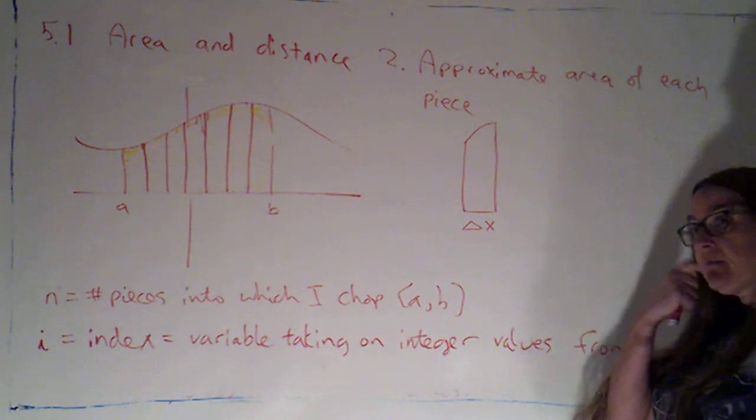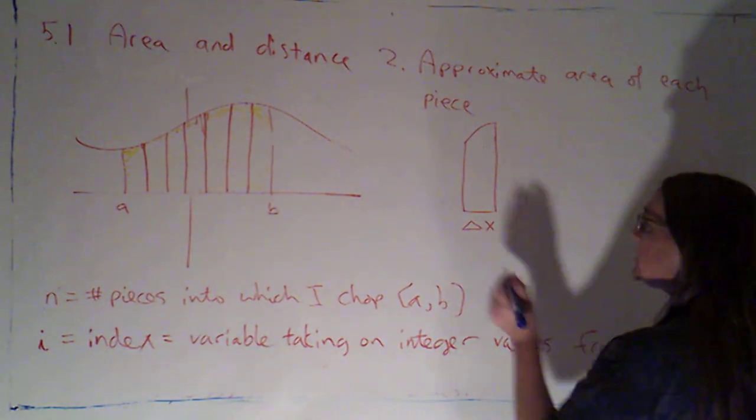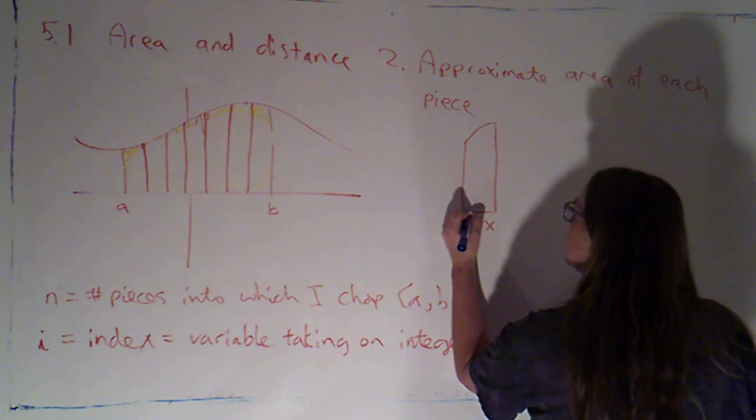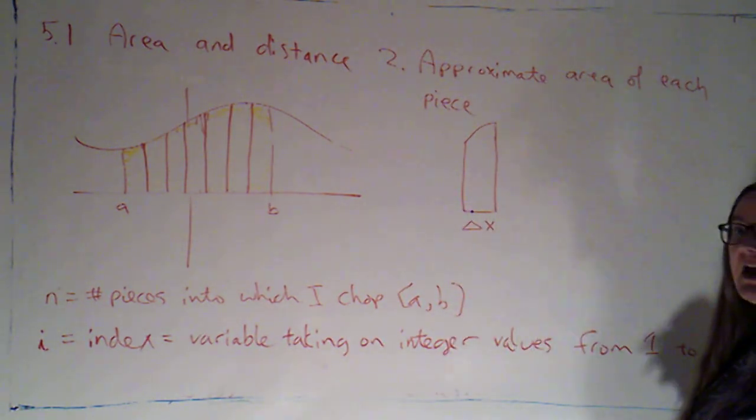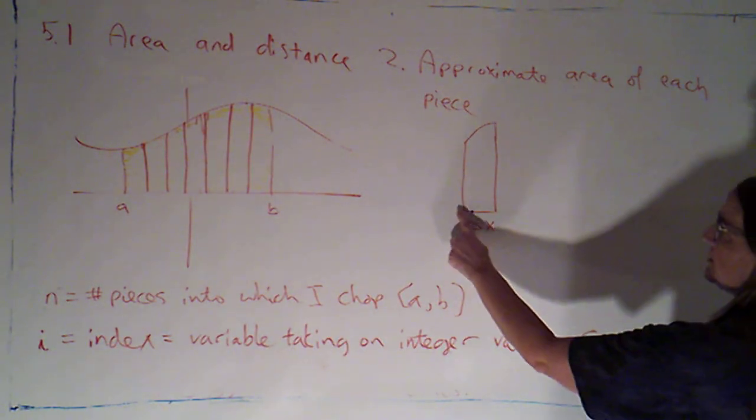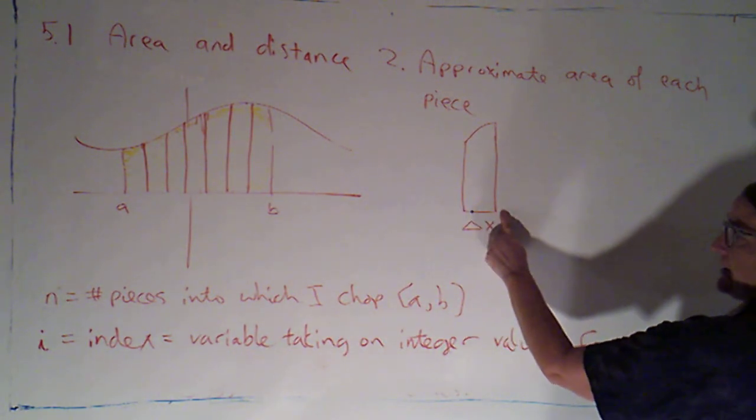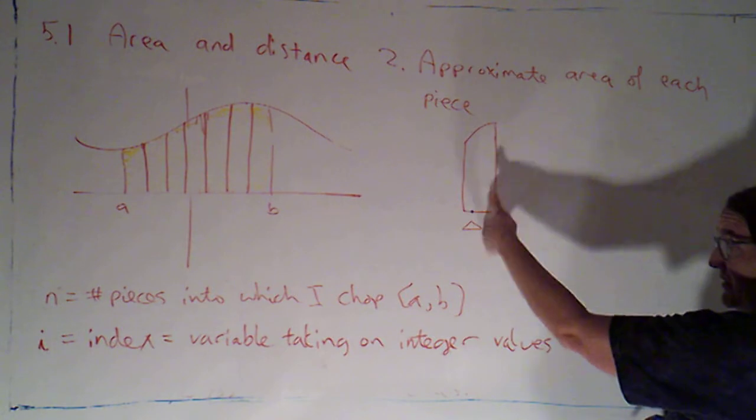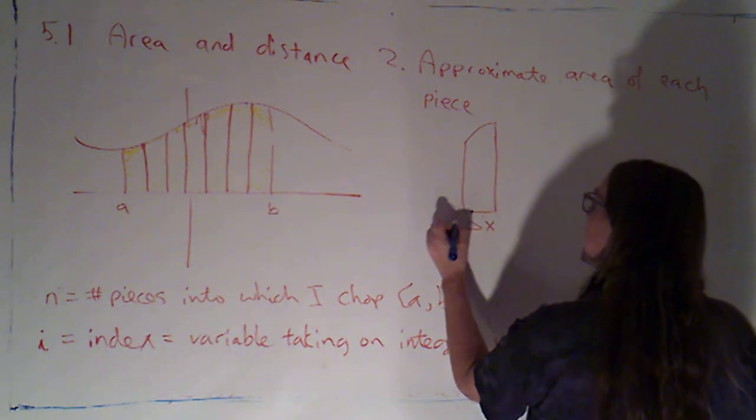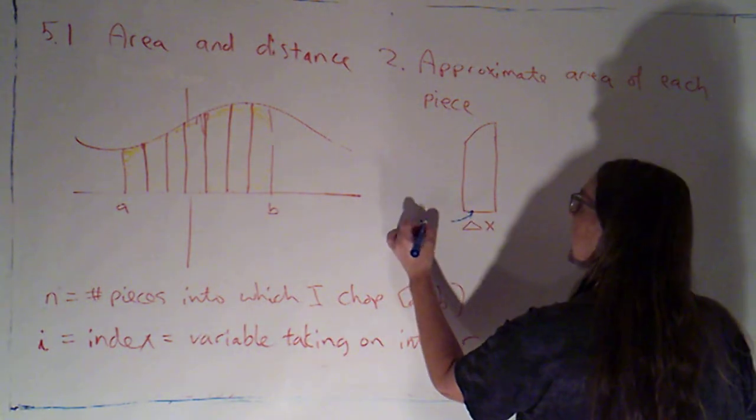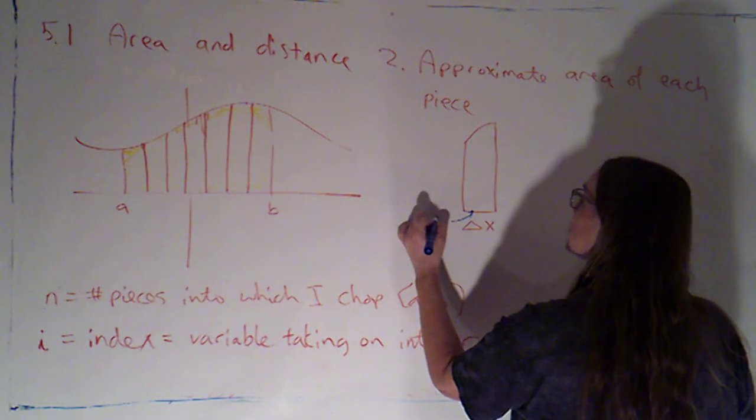But, hopefully, we'll see why this can be a good strategy in math. Okay? So what I'm going to do is I'm going to just pick a point somewhere in this interval. It can be any point I want in this interval. Common choices would be to choose the left-end point or the right-end point or the point halfway exactly in the middle, the midpoint. But it doesn't have to be. I can choose any point that I want.